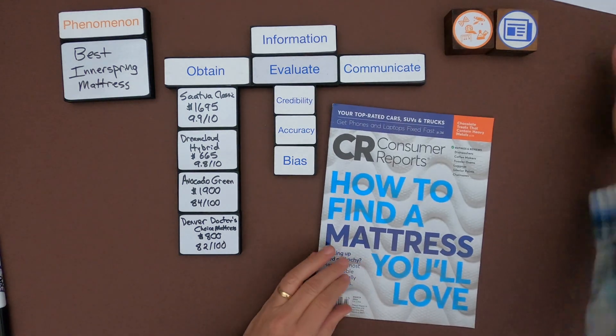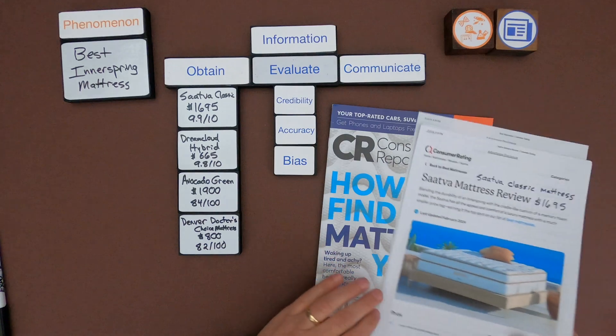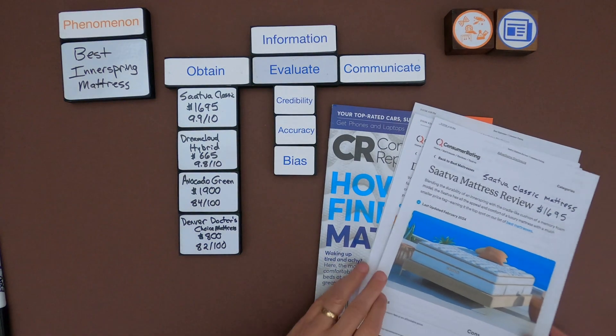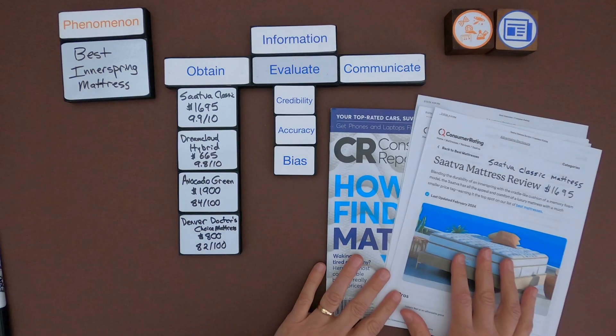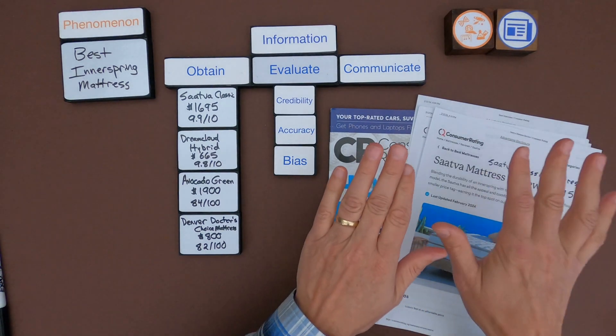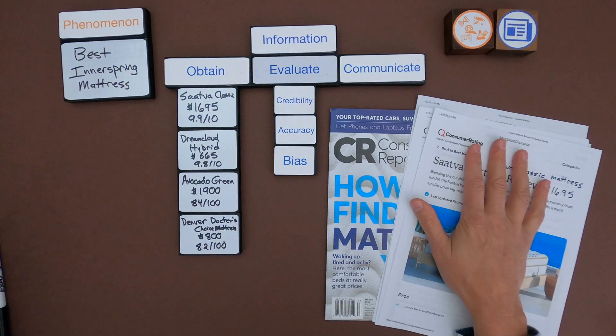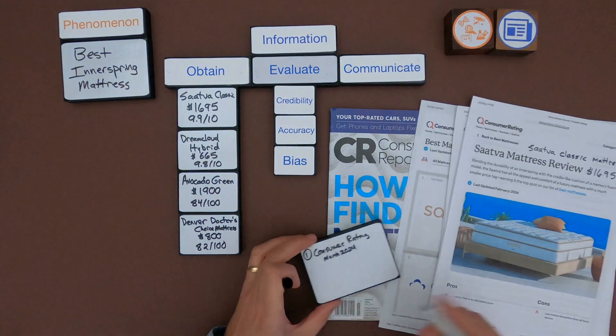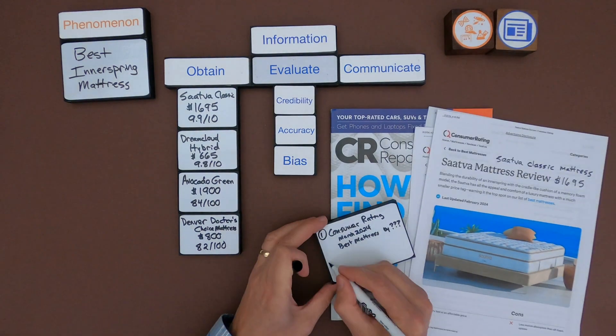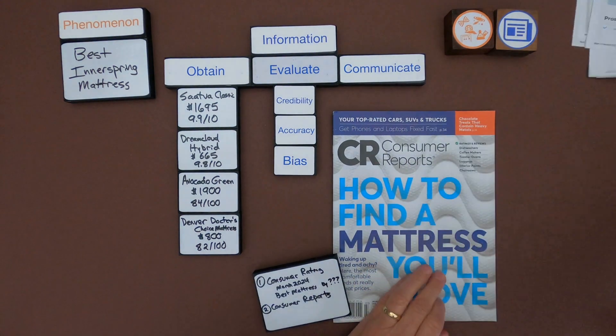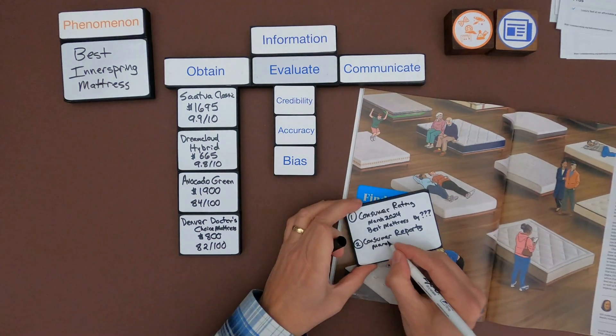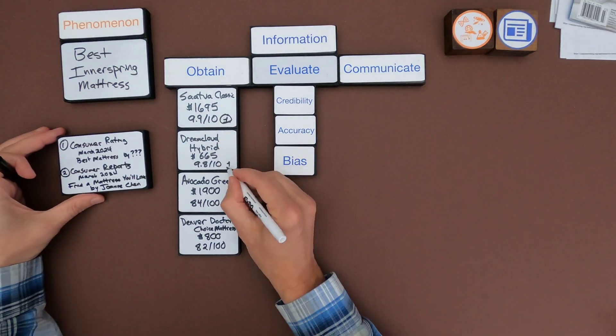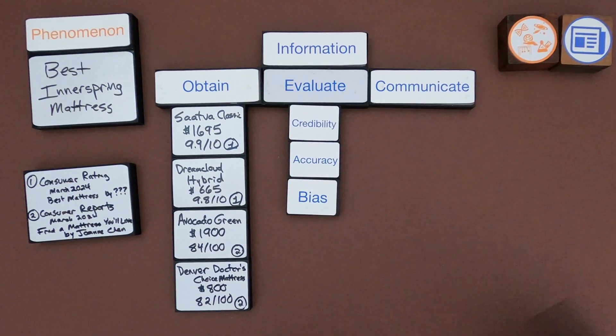Okay, so now I've got four mattresses. So I've got the Saatva, the DreamCloud, we've got the Avocado, and then the Denver's Doctor's Choice. And so the next thing I want to do, and I probably should have done this at the beginning, is I want to include the sources that I'm using, the source material. So let me write that over here.